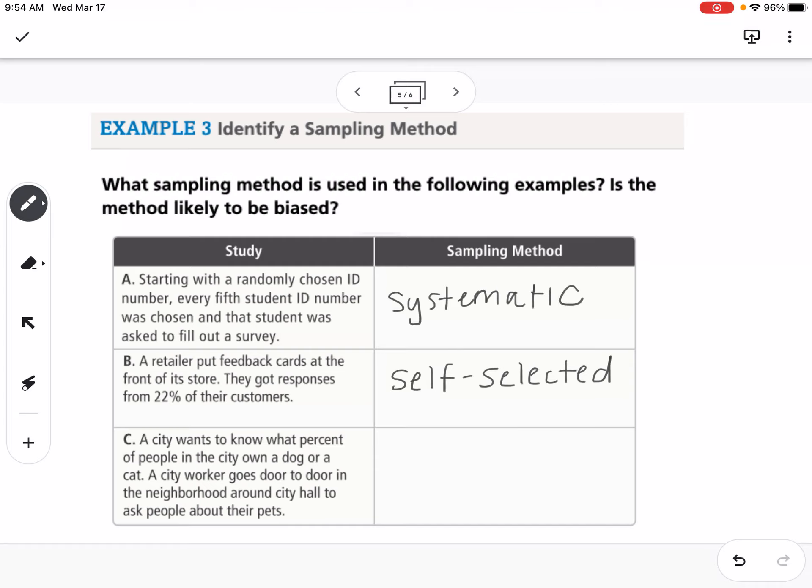The third one is a city wants to know what percent of people in the city own a dog or a cat. A city worker goes door-to-door in the neighborhood around City Hall to ask people about their pets. The key words here are neighborhood around City Hall. So that would be convenience. And there probably is going to be bias, because maybe there are laws on owning dogs and cats, and people that live closer to City Hall are worried about being caught or something. Or maybe the area is more city and less friendly for having pets. There's a lot of things that could go into that. So that is also a method that would be likely to be biased.